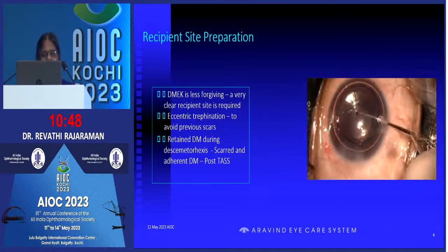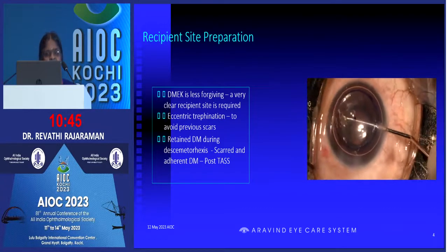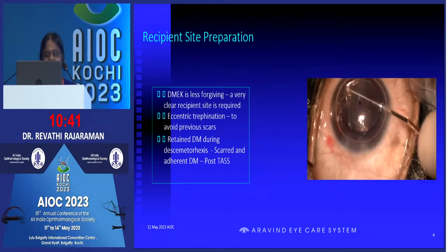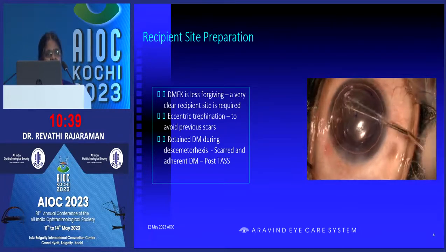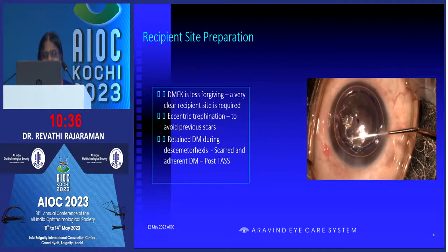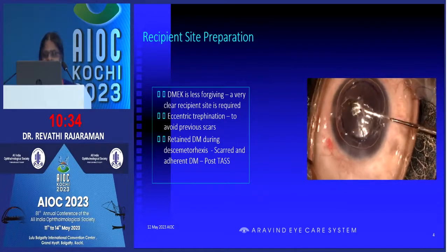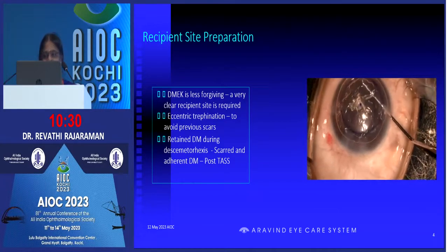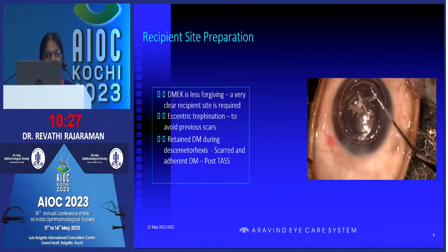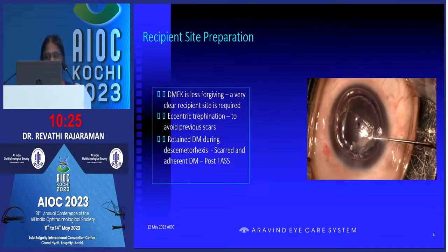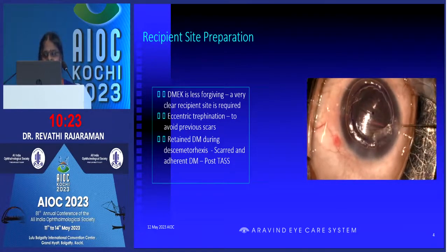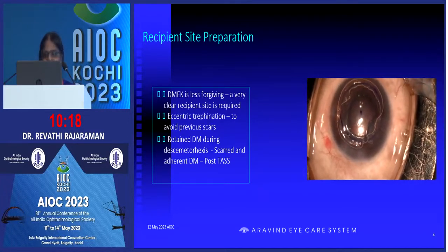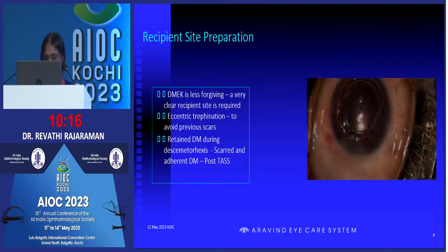Next, to prepare the recipient area, we have to remember DMEC is a little unforgiving. You should not have any tags in between while opposing the donor tissue to the recipient area. I learned that if you do it under air, you can see the margin very clearly. But if you are not able to do it under air, do it under VSCO, then wash it off, put an air bubble, and verify that the margins are all around clear and there are no tags. We have to remove them.